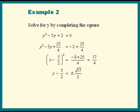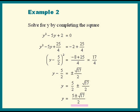Solve for y. Bring negative 5 over 2 to the other side. We get positive 5 over 2, plus or minus the square root of 17 over 2. We have 5 plus or minus the square root of 17, over 2. And that's our answer.